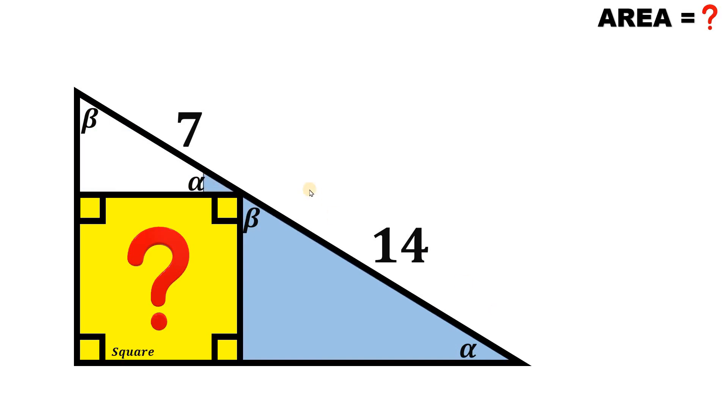Now since they are similar to each other, notice their hypotenuse. This is 7, this is 14. So 14 is twice of 7. So the hypotenuse of this big right triangle is twice the hypotenuse of the smaller right triangle.